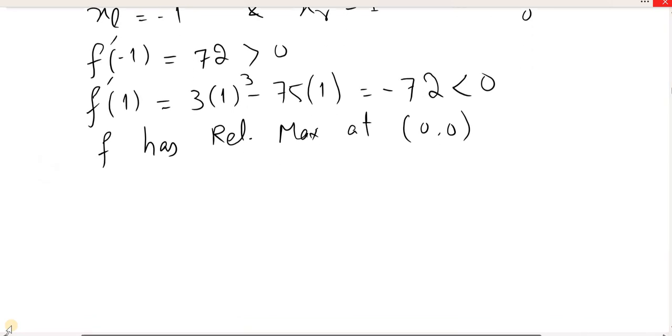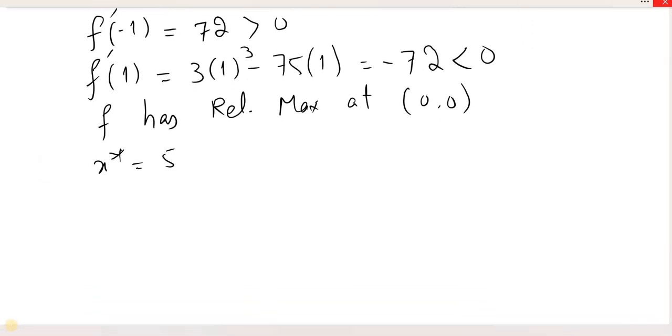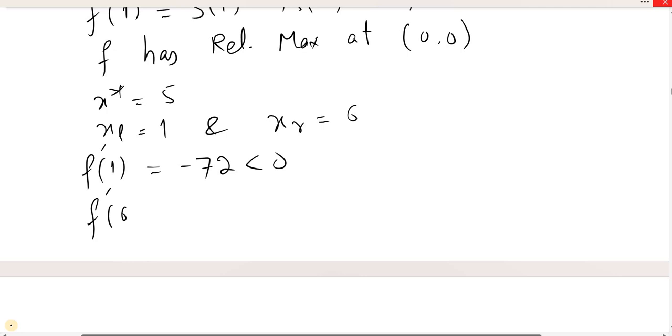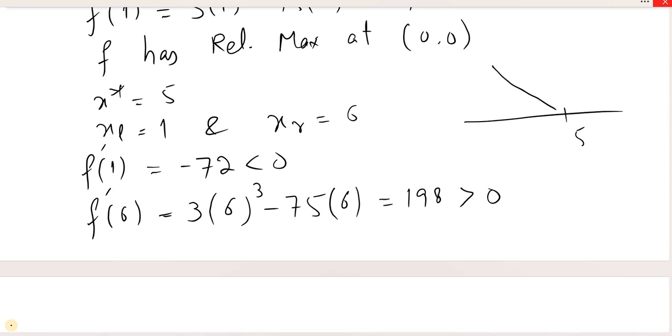And finally x is equal to 5. Uske left pe ham lenge 1, right pe ham lenge 6. First derivative ka andar 1 put kiya, to humne already pata hai, wo minus 72 hai, which is less than 0. Aur ab ham put kar dete hai derivator ka andar 6. 3 times 6 cube minus 75 times 6. In ko ab simplify karenge, humaare paas answer aega 198 positive, greater than 0. Aur dekho 5 ka left pe kya hai, decreasing function, right pe kya increasing function.